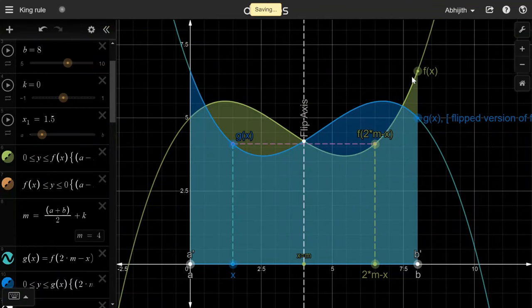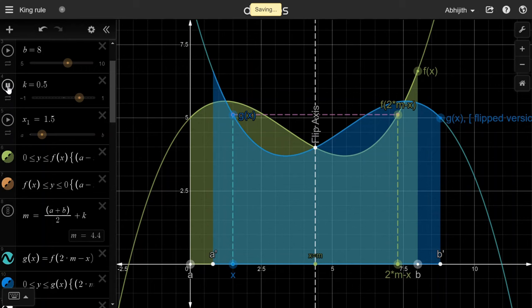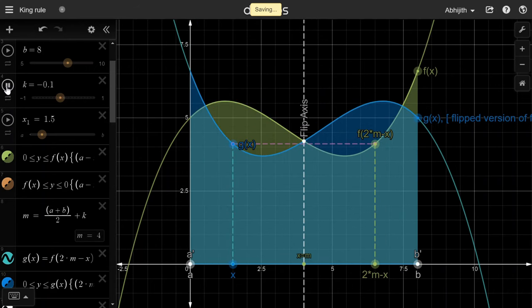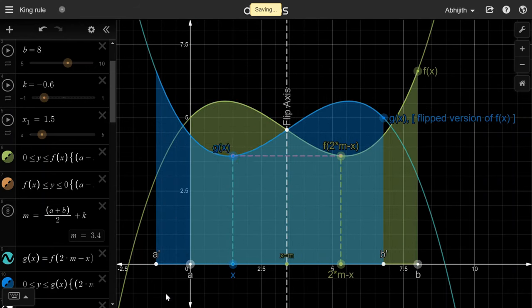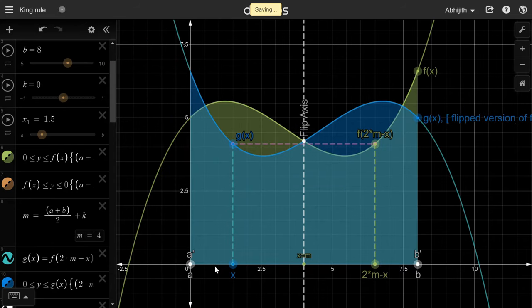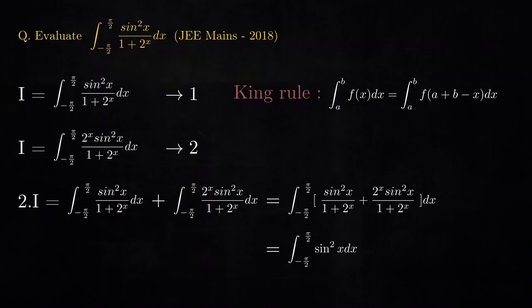And this is the reason why we flipped the graph f about the axis that is mid-way between the integral limits. If the whole purpose was to preserve the area while flipping, we could have chosen any axis, not just the one that is mid-way between the integral limits, isn't it? But then the integral limits of these two graphs would be different. By choosing the axis that is mid-way, the integral limits are also preserved. And that's what allows us to club the two integrals into a single and often a simple integral.